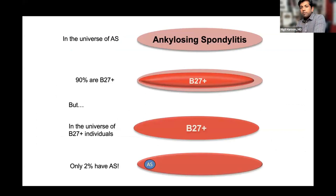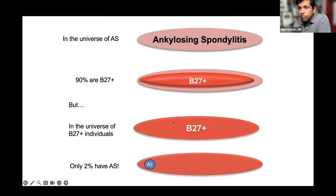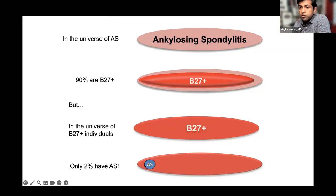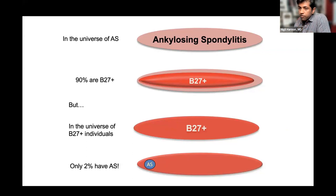While 80–90% of AS patients are B27-positive, screening everyone with B27 is not useful because out of 100 B27-positive individuals, only about 2 will develop AS. The vast majority do not develop disease — likely because B27 alone is not sufficient, and additional triggers or genes are needed for disease to develop.